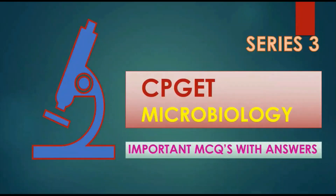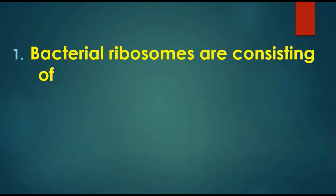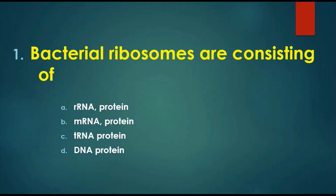Hi everyone. In the CPJ Microbiology important MCQs, this video is series 3 containing 25 important questions. Let's begin. First question: bacterial ribosomes are consisting of — options are: A) rRNA + protein, B) mRNA + protein, C) DNA + protein, D) tRNA + protein. The answer is rRNA + protein, because ribosome contains rRNA plus protein.